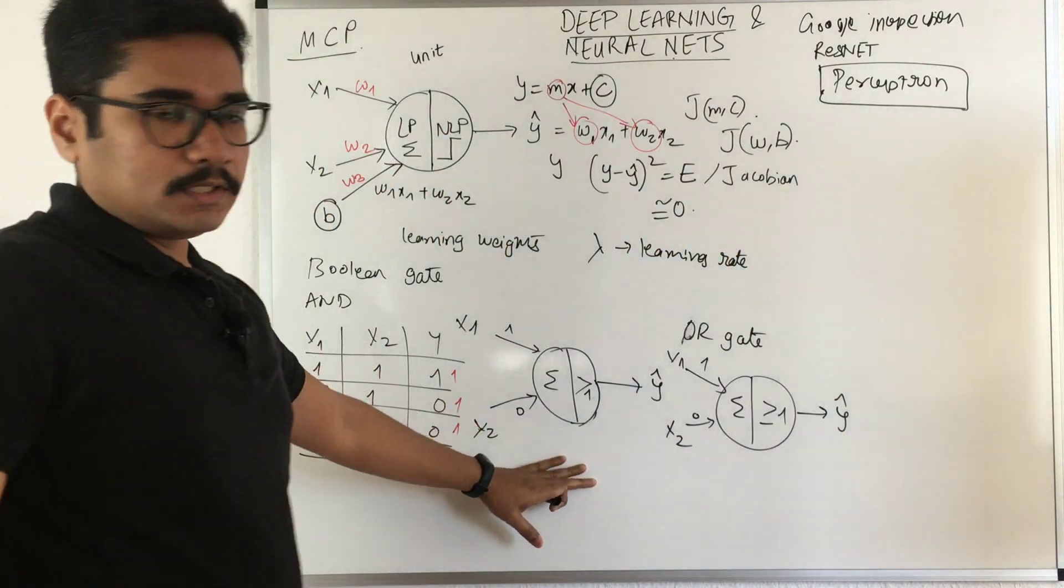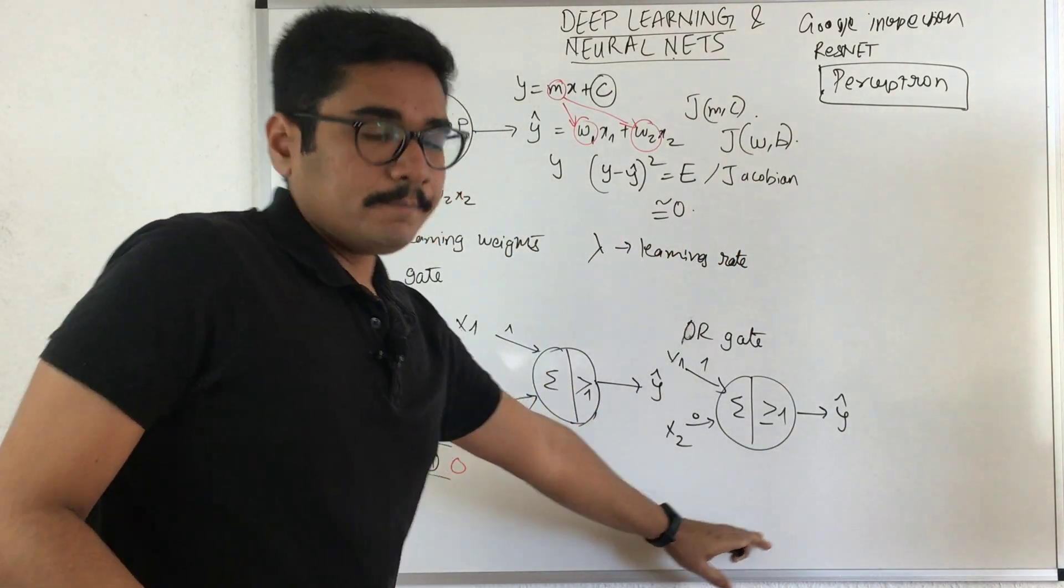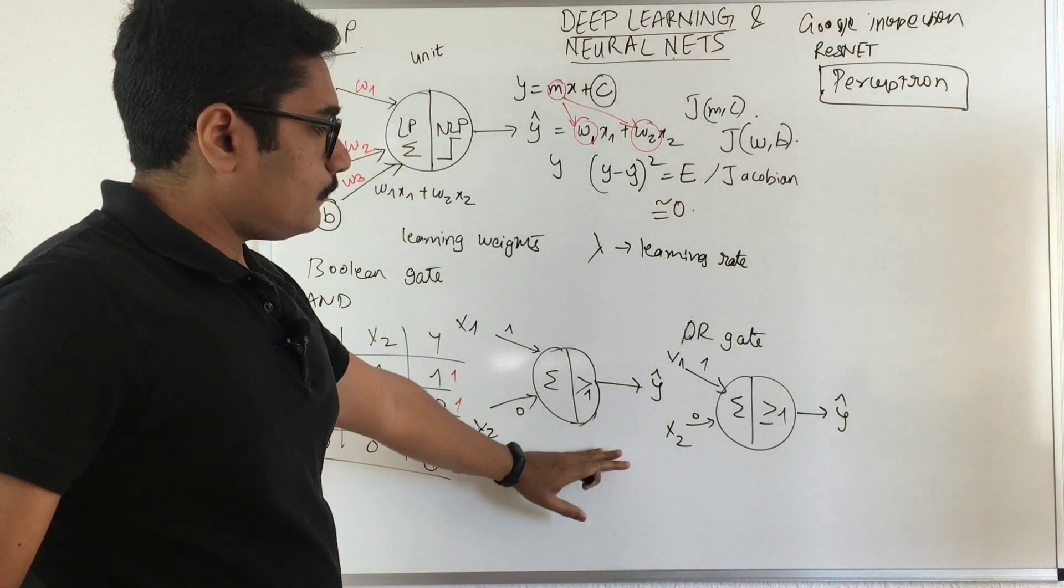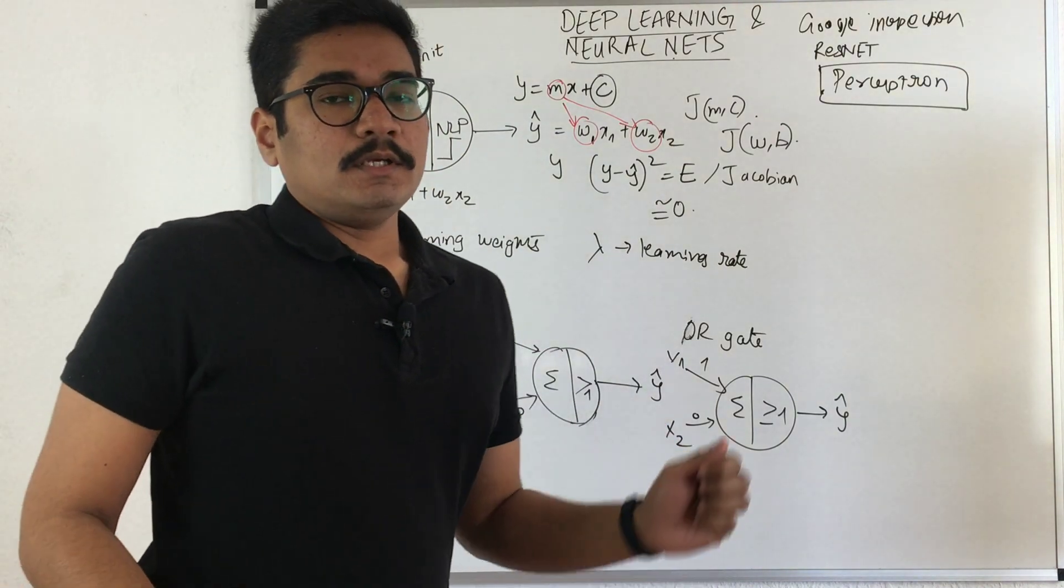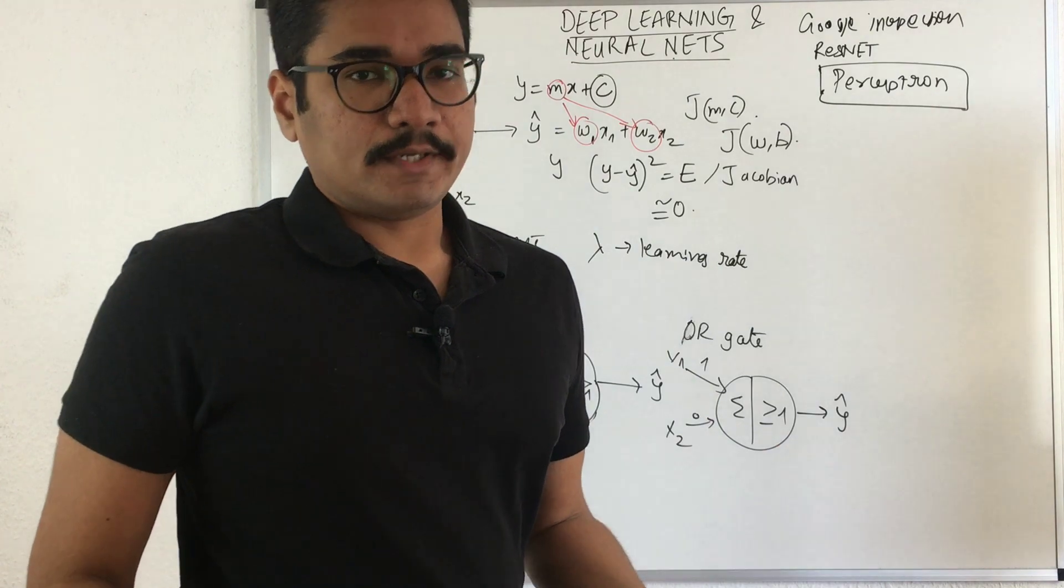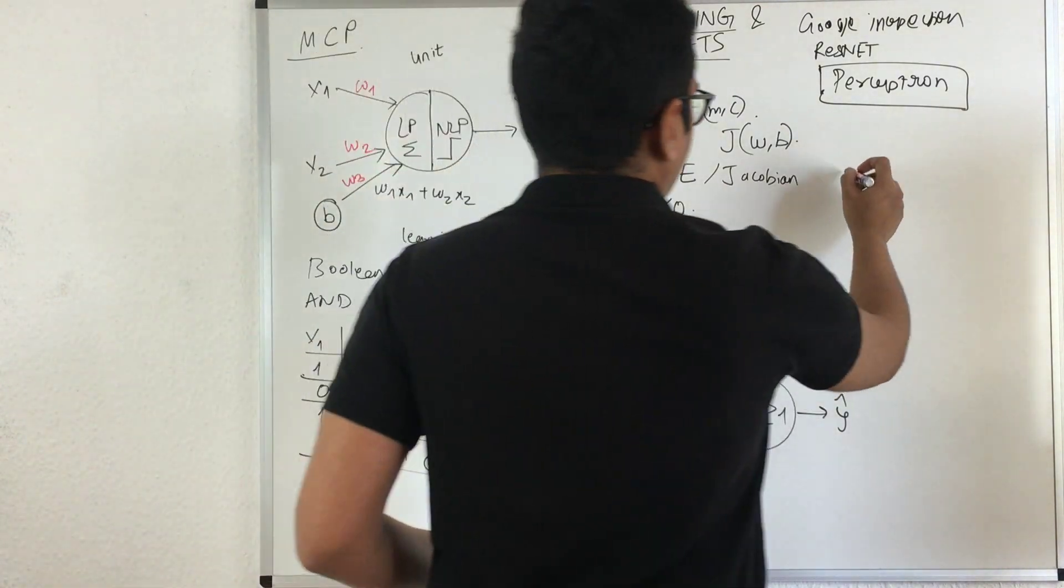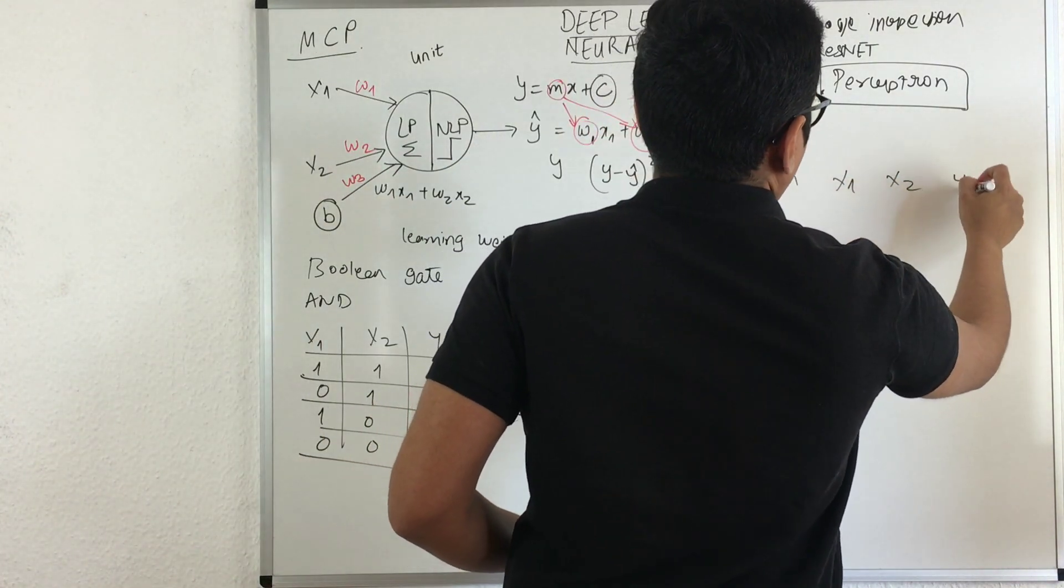Till this portion they could implement it perfectly, but the problem with the perceptron is that it cannot implement the XOR gate.